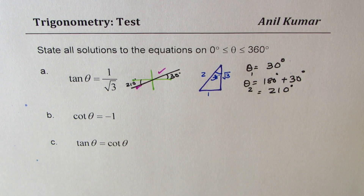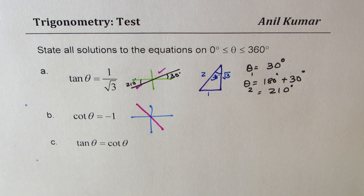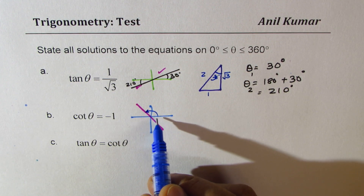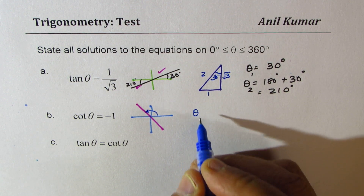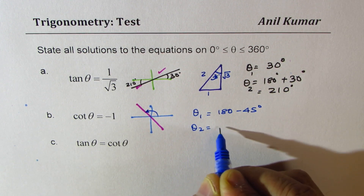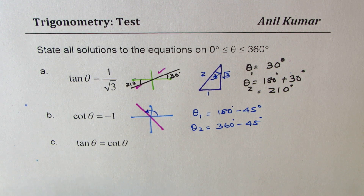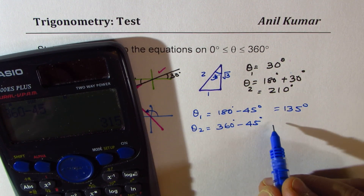Part B is cot theta equals negative 1. Cotangent is the reciprocal of tan and is negative in quadrant 2 and quadrant 4. The magnitude of minus 1 corresponds to an angle of 45 degrees. Therefore the solutions are: theta 1 equals 180 minus 45 degrees, which is 135 degrees, and theta 2 equals 360 minus 45 degrees, which is 315 degrees.